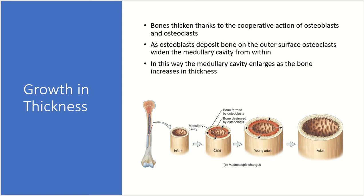Also regarding growth in thickness, bones thicken due to the cooperative actions of both osteoblasts and osteoclasts. An osteoblast deposits bone on the outer surface while osteoclasts widen the medullary cavity within, so the bone can grow in thickness. The medullary cavity enlarges as the bone increases in thickness — otherwise you would have a very small medullary cavity in adult bones. We need the cooperative action of the osteoclasts to continue to enlarge that medullary cavity as we grow.